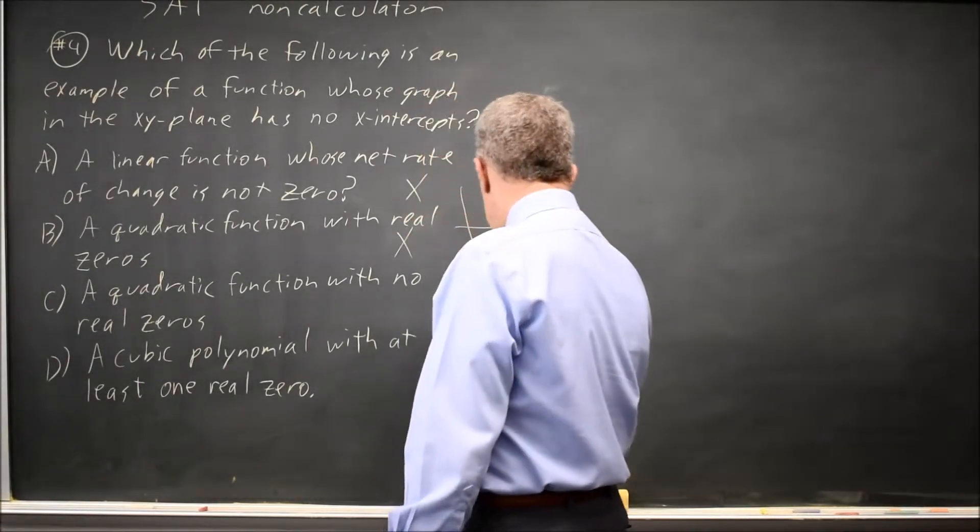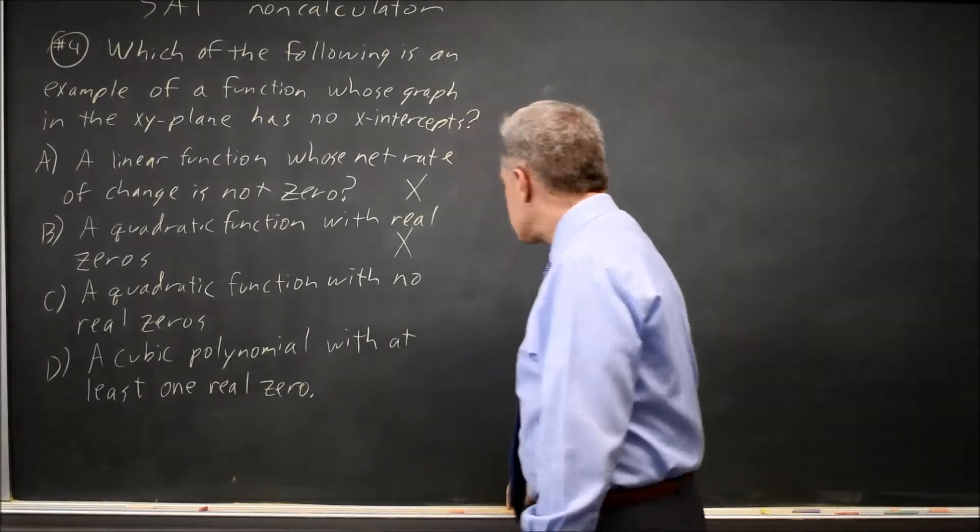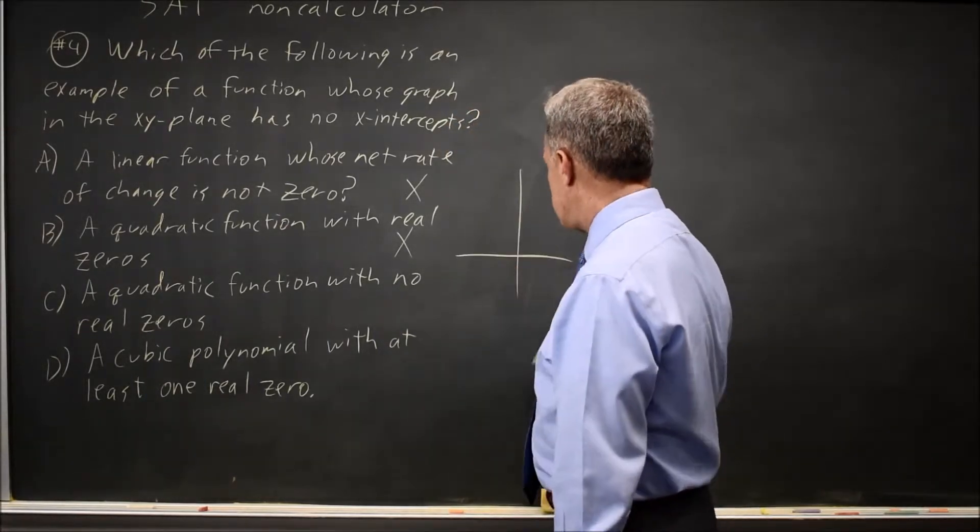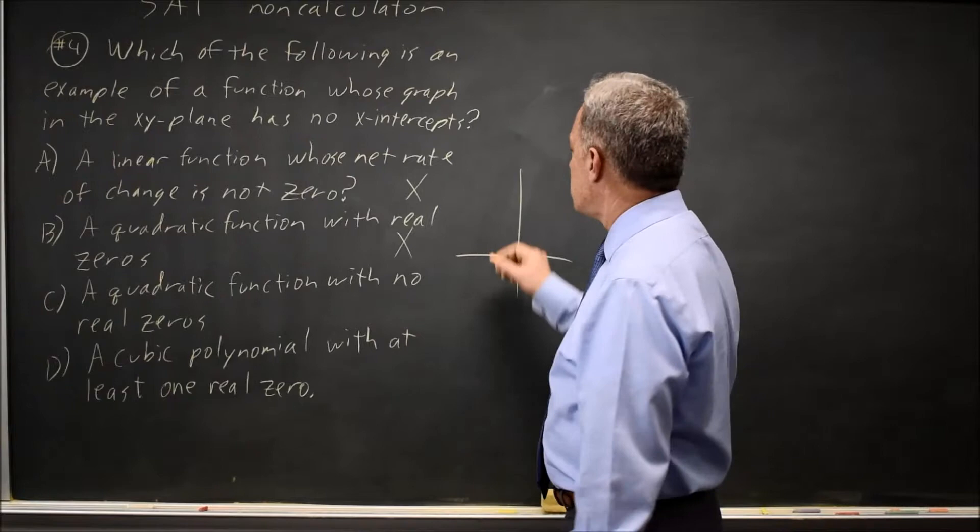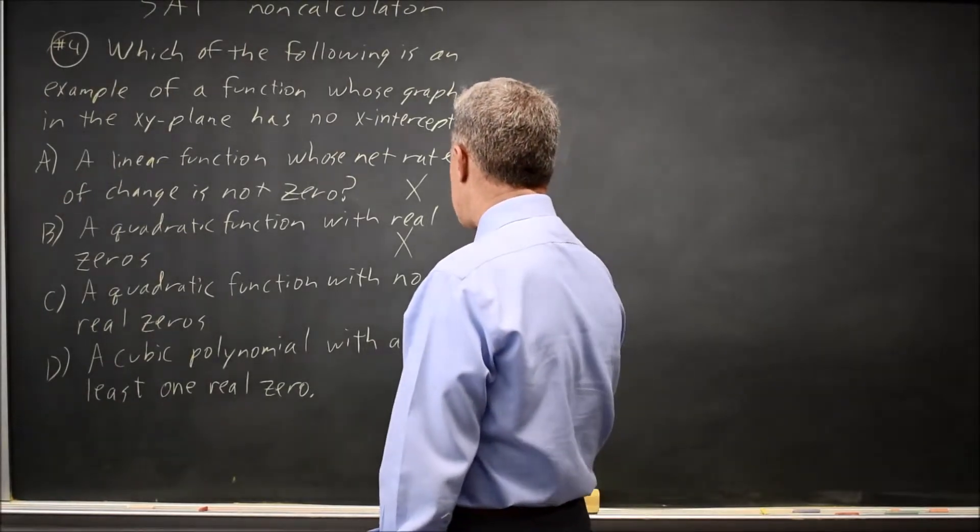So A is not correct, B is not correct. Choice C is a quadratic with no real zeros. Since the zeros are the x-intercepts, if you have no real zeros, you have no x-intercepts, so this would be the correct answer.